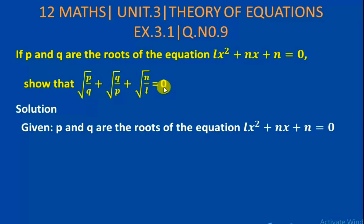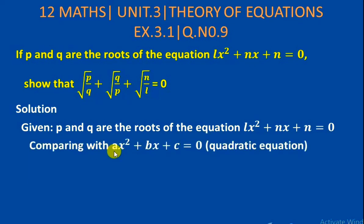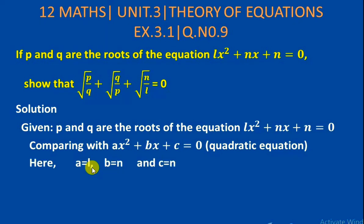Solution: Given p and q are the roots of the equation lx² + nx + n = 0. This is a quadratic equation, so comparing with the general form ax² + bx + c = 0, the roots are p and q. Here a is replaced by l, b is replaced by n, and c is replaced by n.